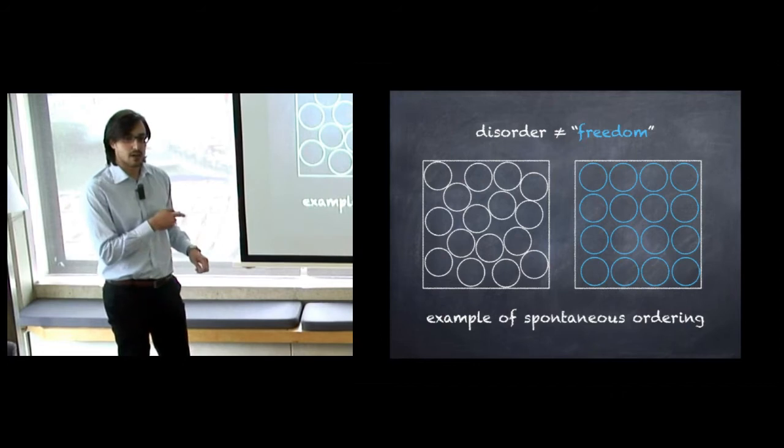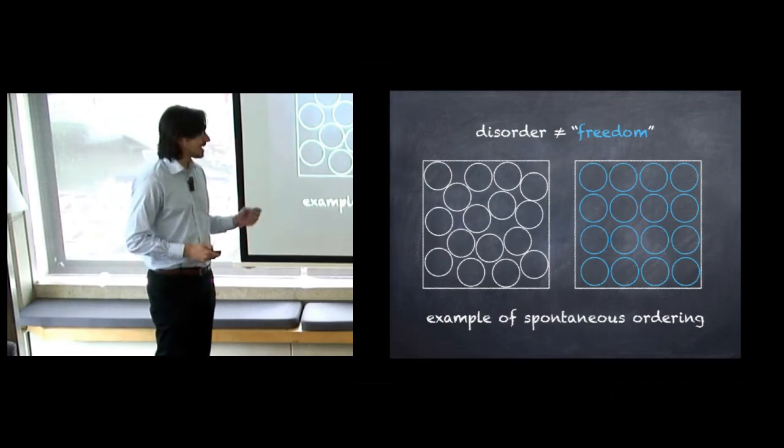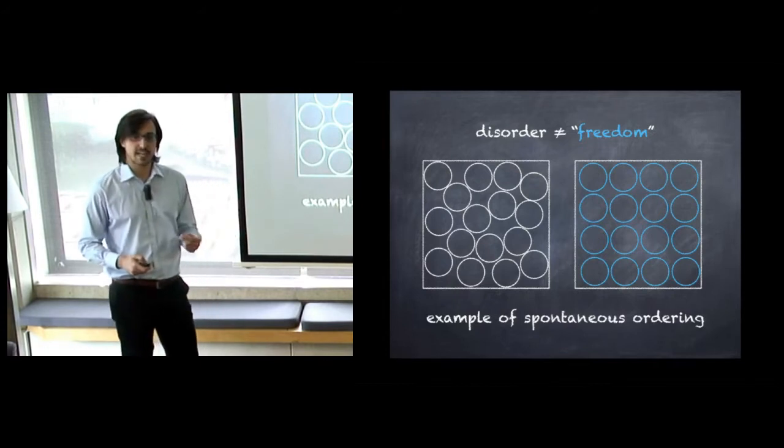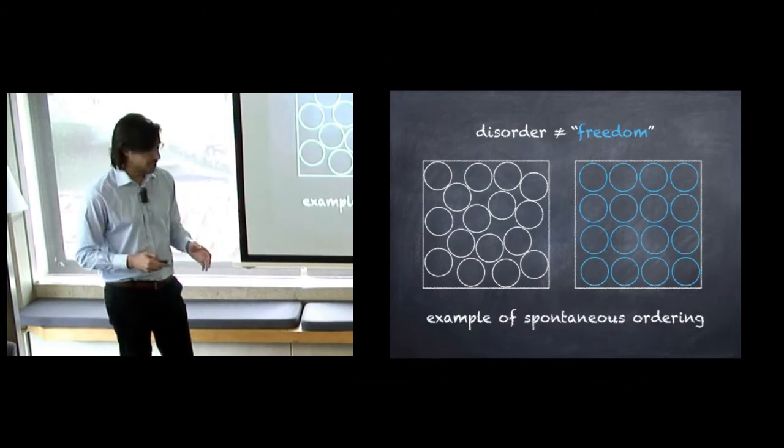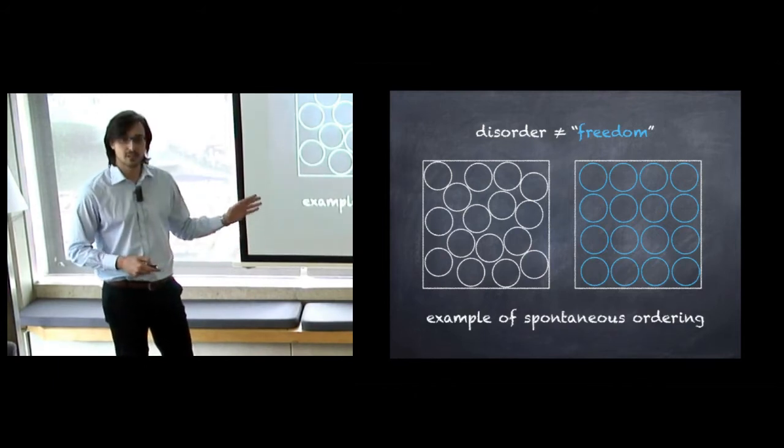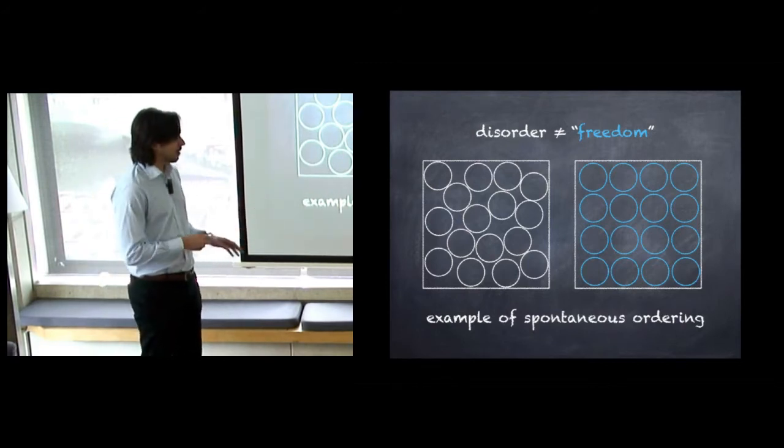This is called spontaneous ordering and it's a clear example of how important entropy is. Entropy can single-handedly determine the emerging behavior of a complex system even way beyond our intuition. It took the scientific community a very long time to accept this result.